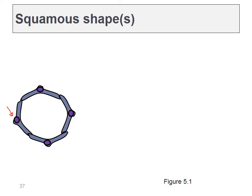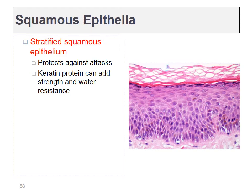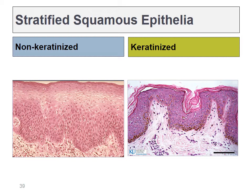The stratified squamous epithelium extends more than one cell layer thick. A very common type is found in the skin, where the surface layer — the apical surface — looks pretty dead. We see two basic types: keratinized, where cells at the surface are dead, found on the outer body surface, and non-keratinized, found inside the body such as inside the mouth, where the surface should remain moist because all cells are still alive.